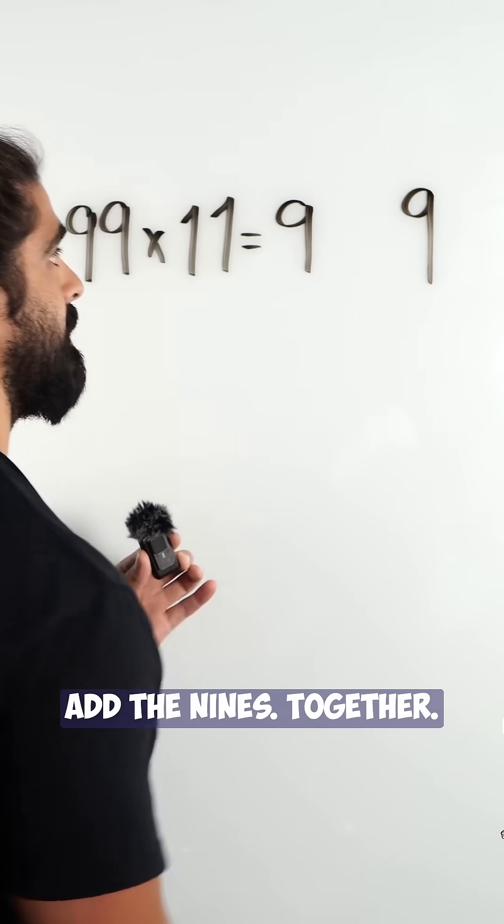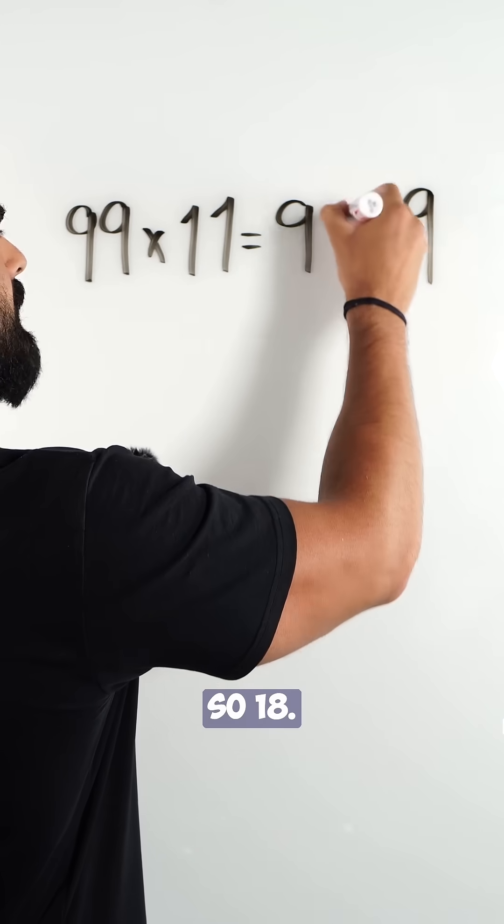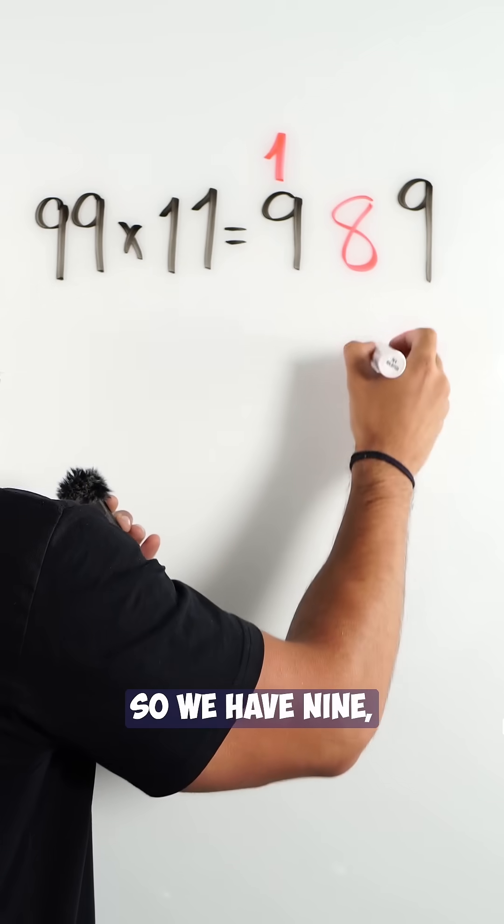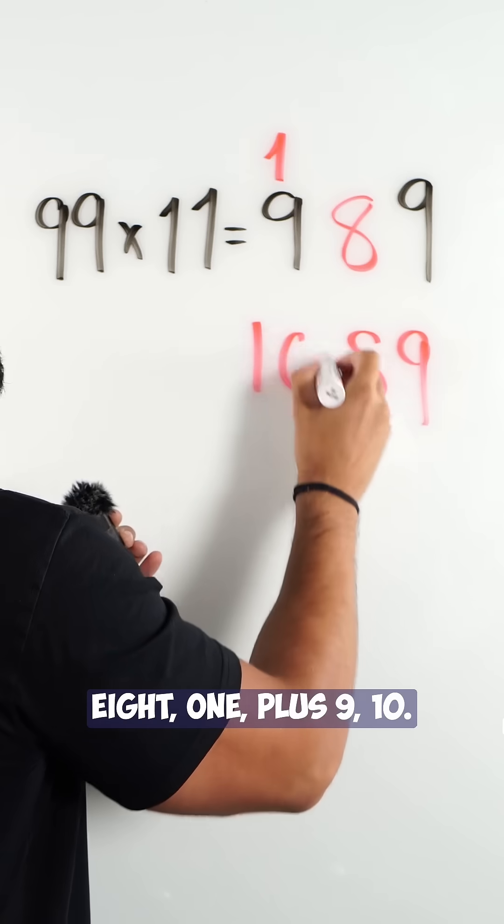Then we're going to add the 9s together. 18. So 18. Add up the columns. So we have 9, 8, 1 plus 9, 10.